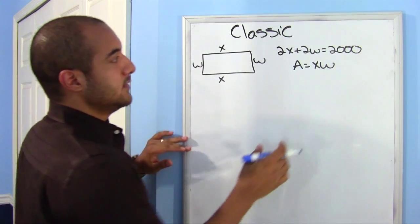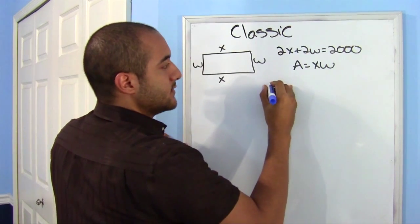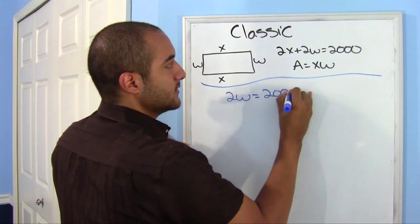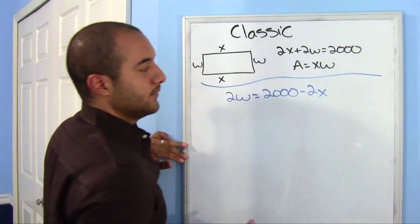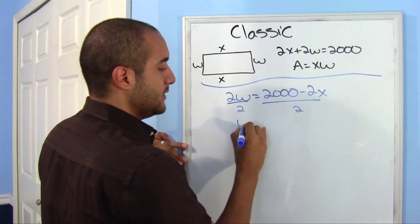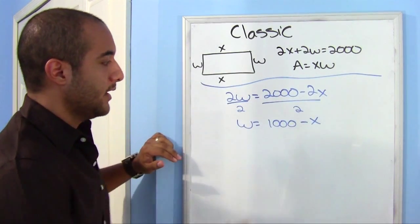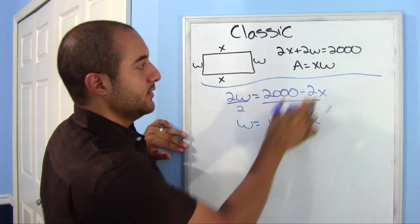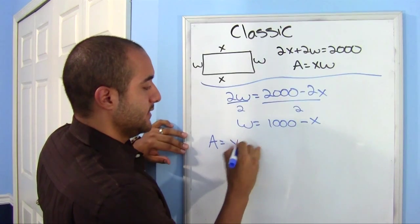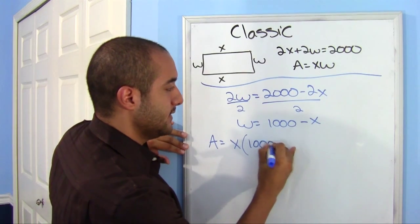To do that, let's go ahead and solve for w. So let's get w by itself here. So let's do 2w equals 2,000 minus 2x. Did you see how I did that, I just moved the 2x over. Divide by 2, divide by 2, and we know that w is equal to 1,000 minus x. I'm going to go ahead and put that into my area now. So I know that the area is equal to x times, it's not w anymore, you know what it is. It's 1,000 minus x.